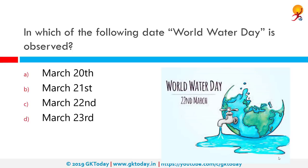On which date is World Water Day observed? It is observed on March 22nd. World Water Day is an annual UN observance day that highlights the importance of fresh water. The day is used to advocate for the sustainable management of fresh water resources and is celebrated around the world with a variety of events.